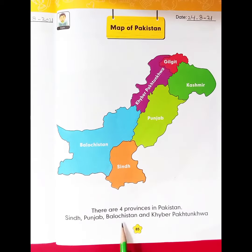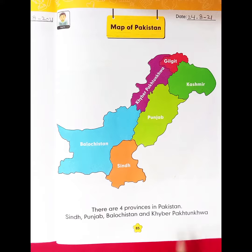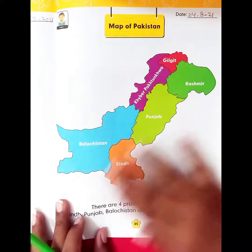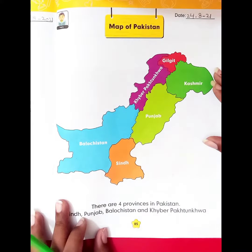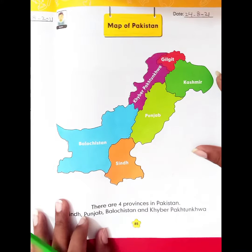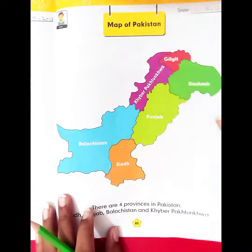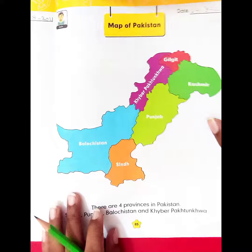Punjab, Baluchistan, and KPK. Let's see the map. Just as you know, you will color the map according to page number 86.